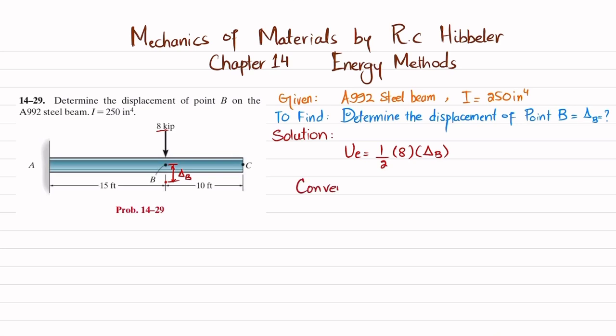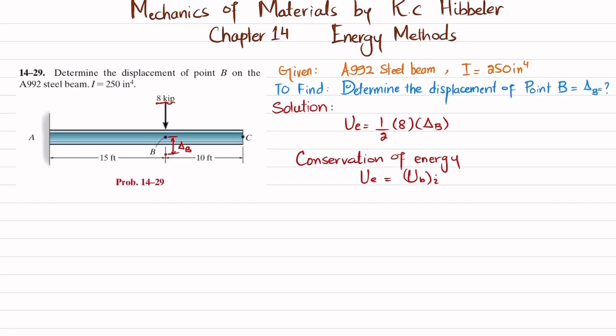Due to the law of conservation of energy, this external work is stored in the beam in the form of strain energy due to bending. Because you can see, due to this load there will be bending in this beam. So Ue will be equal to U bending, the strain energy due to bending. Now we will find this strain energy due to bending.